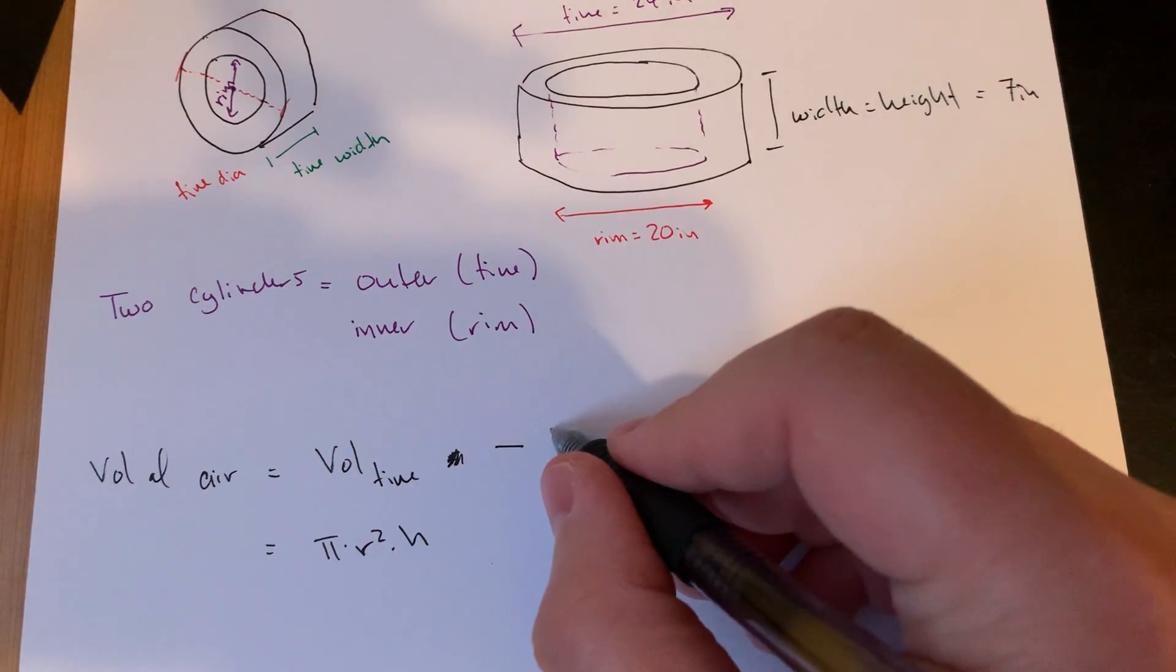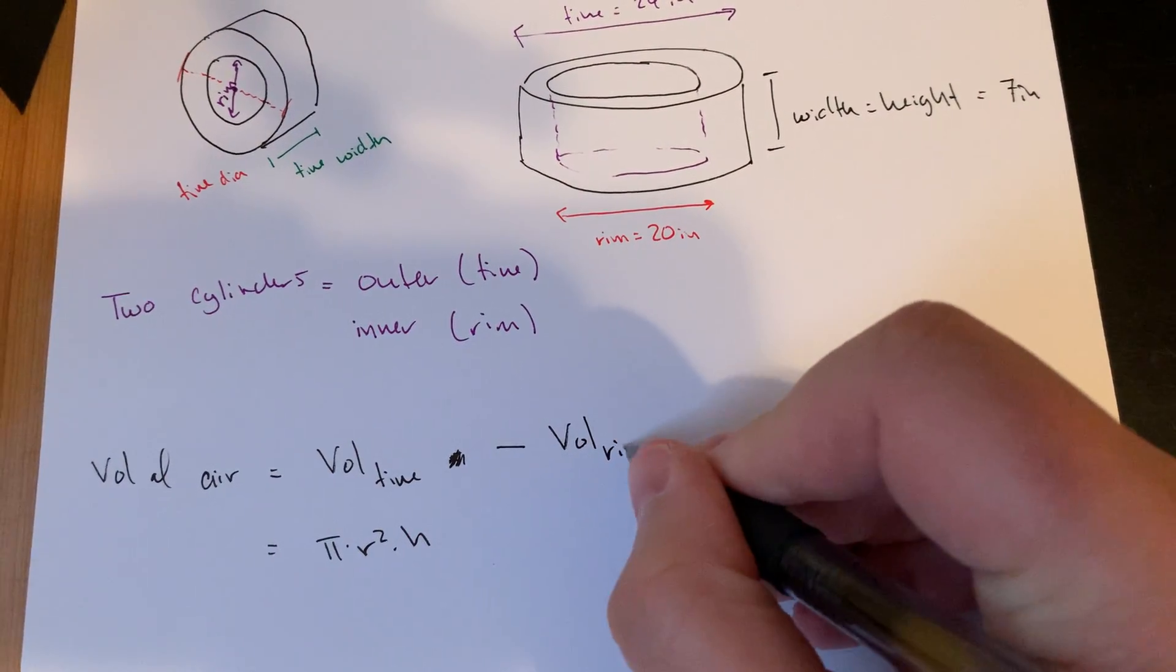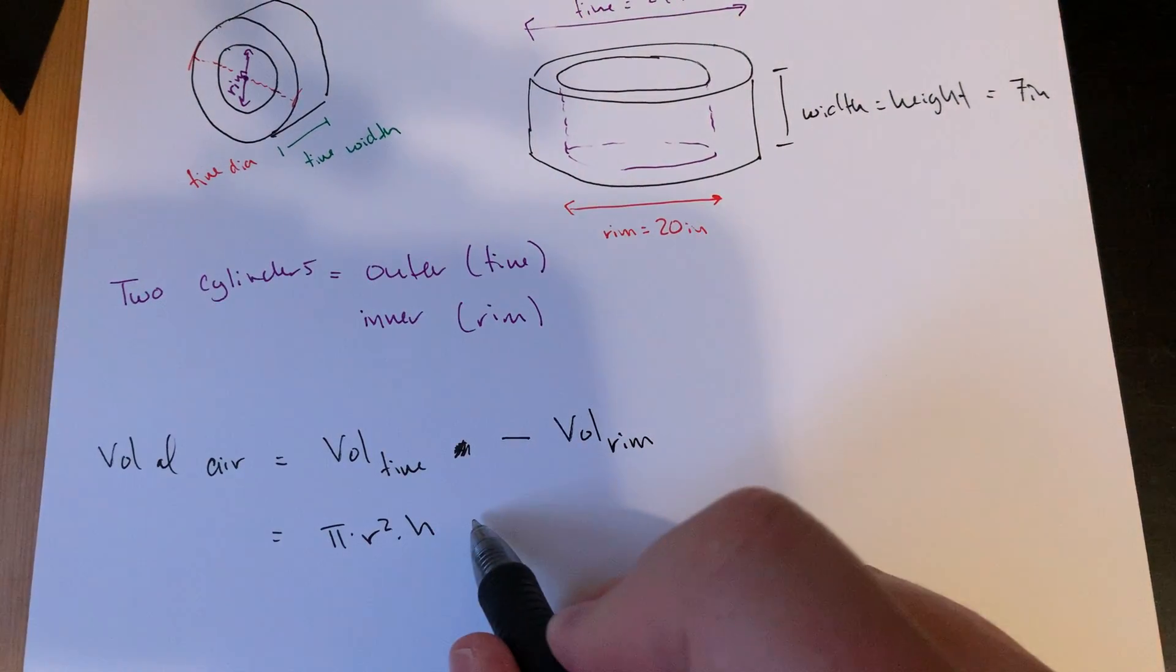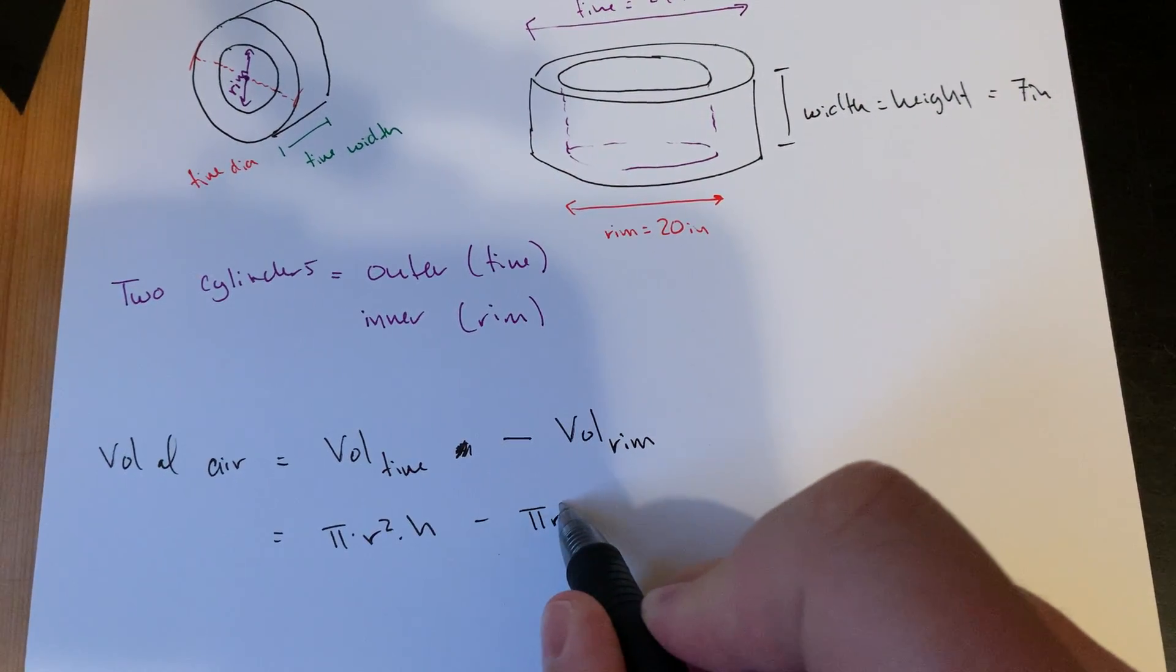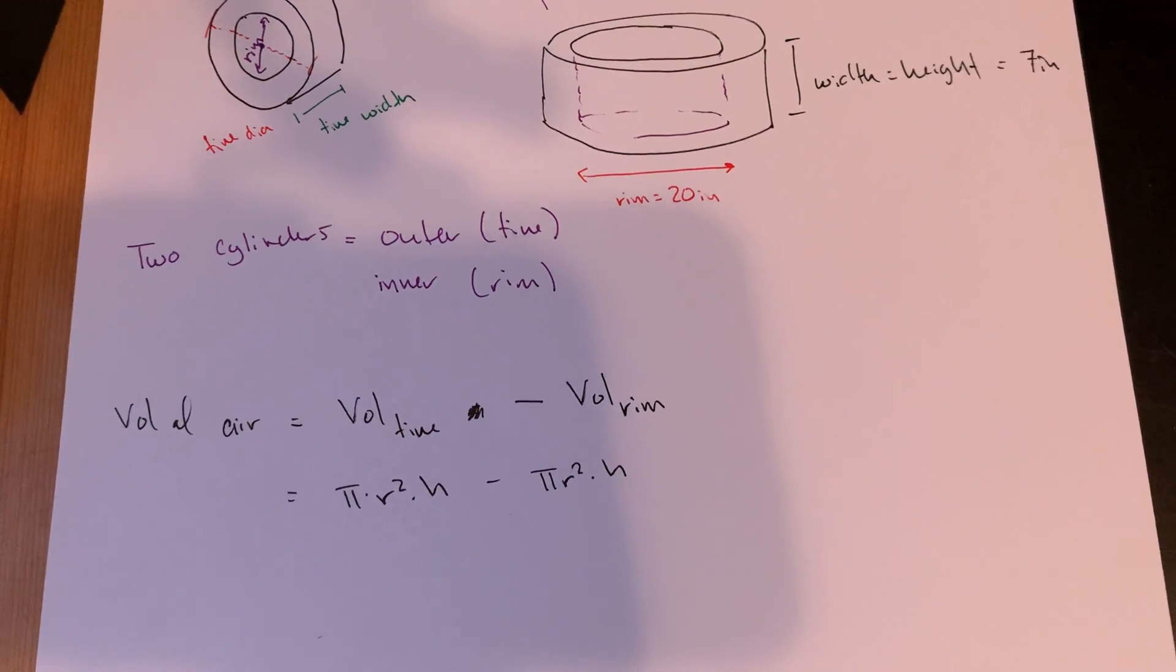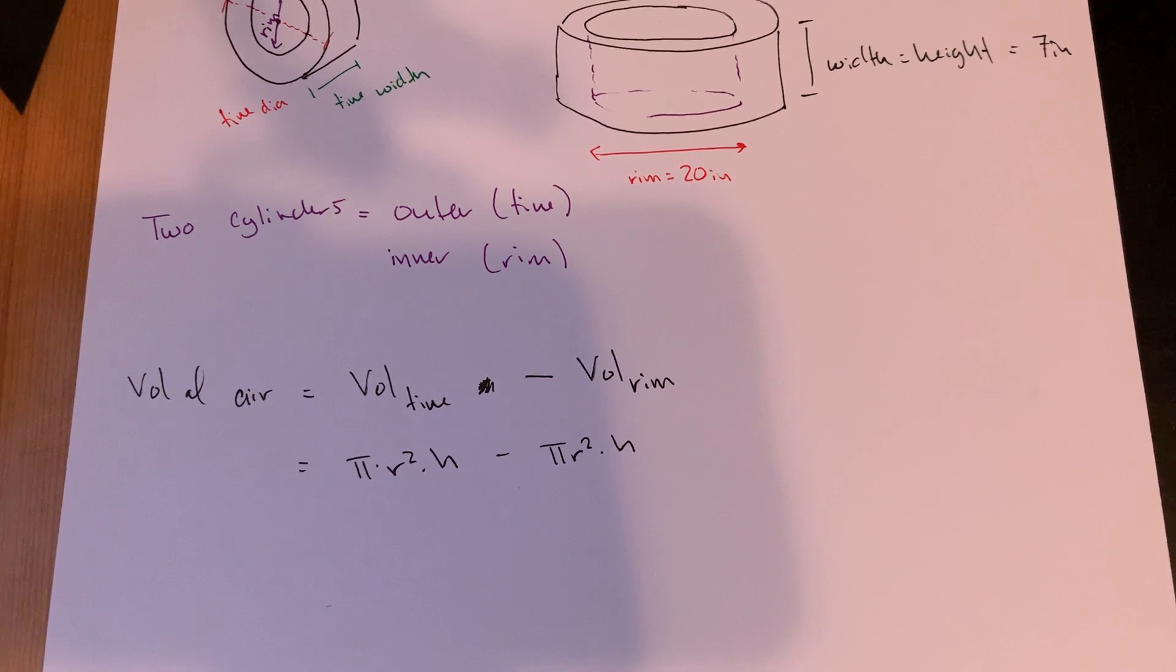Right, so these are going to be two different cylinders, sort of an outer and an inner. You have this outer diameter which is the tire diameter, which is 24, and you have this inner diameter which is the rim diameter, which is 20.